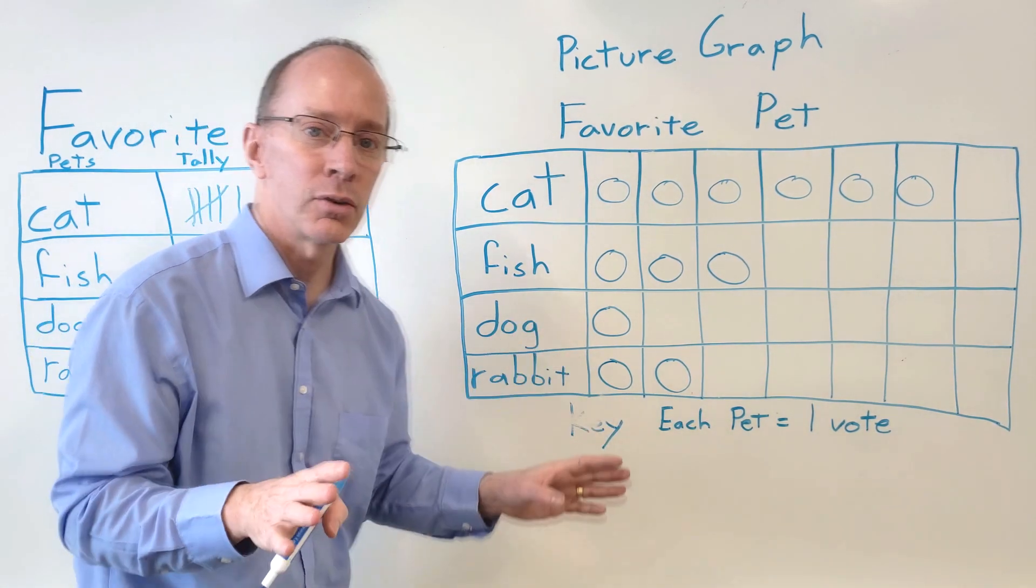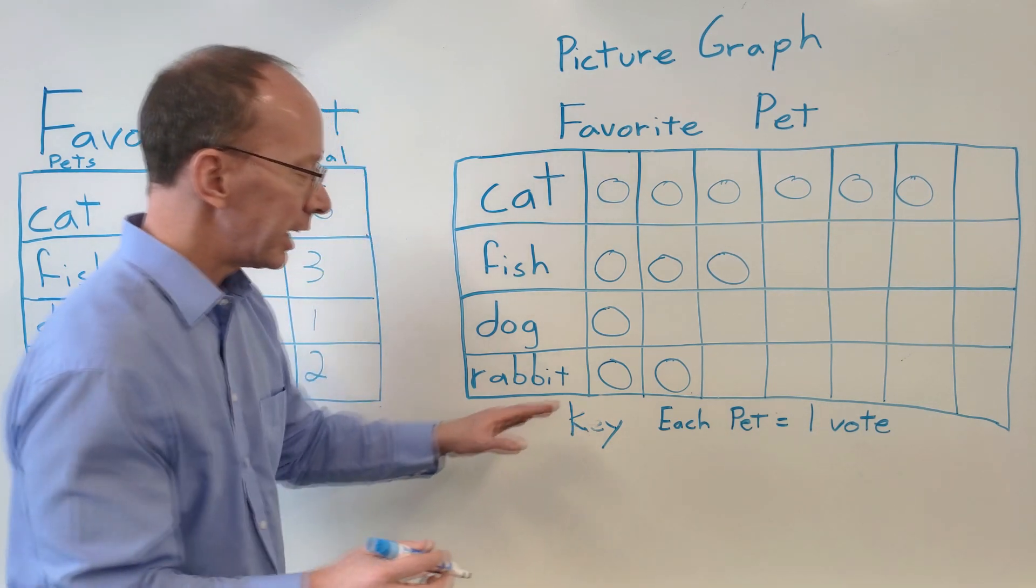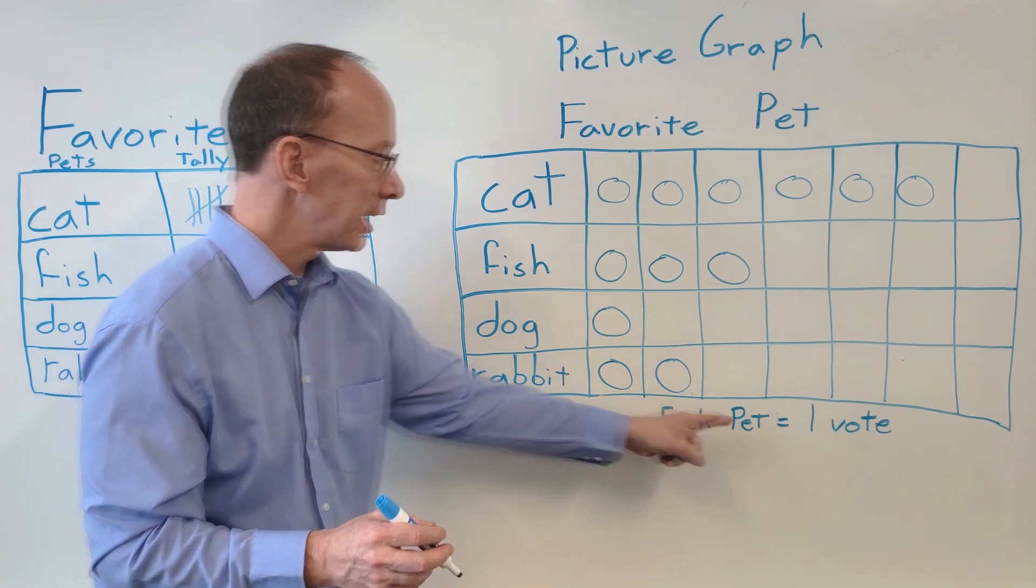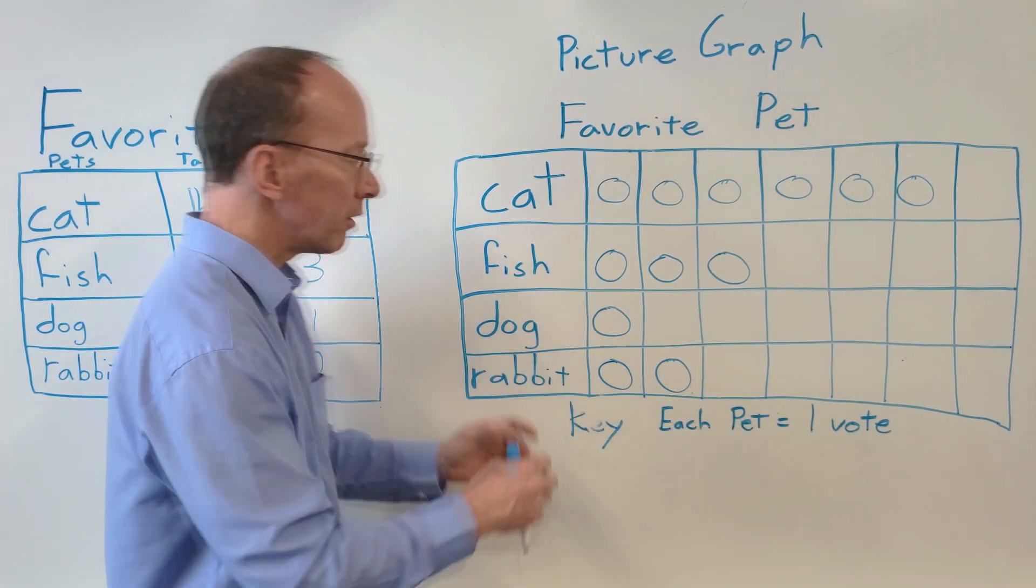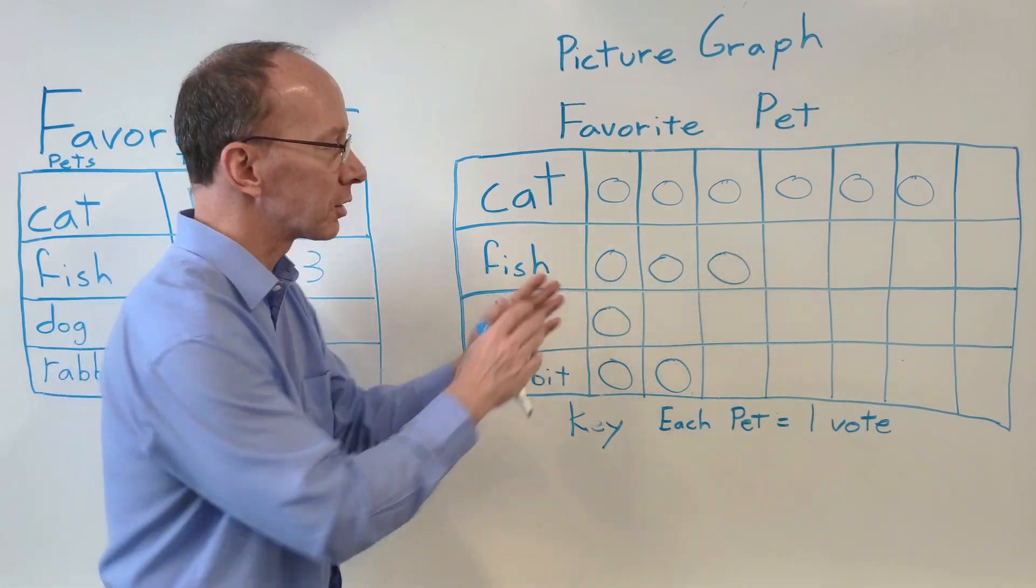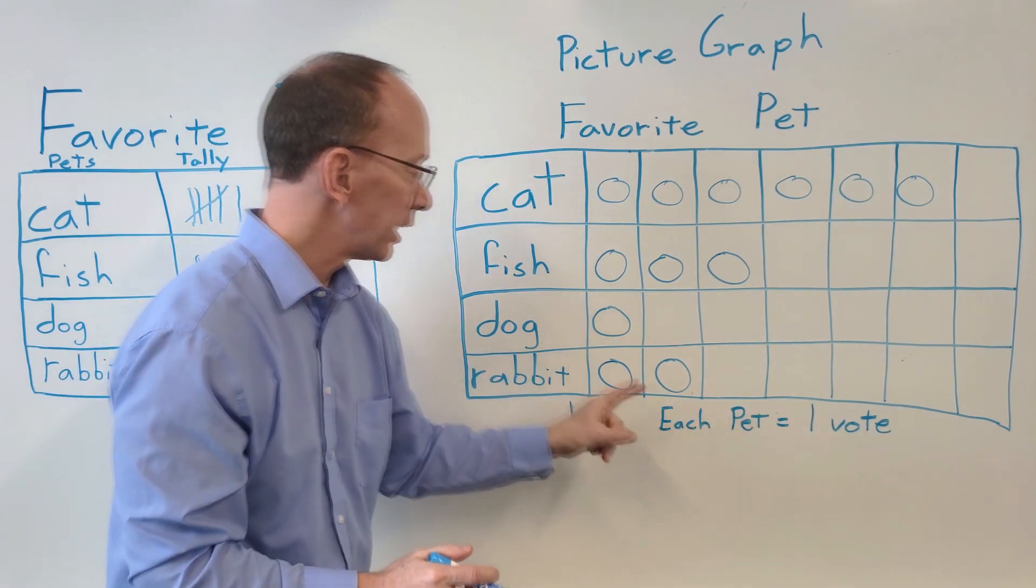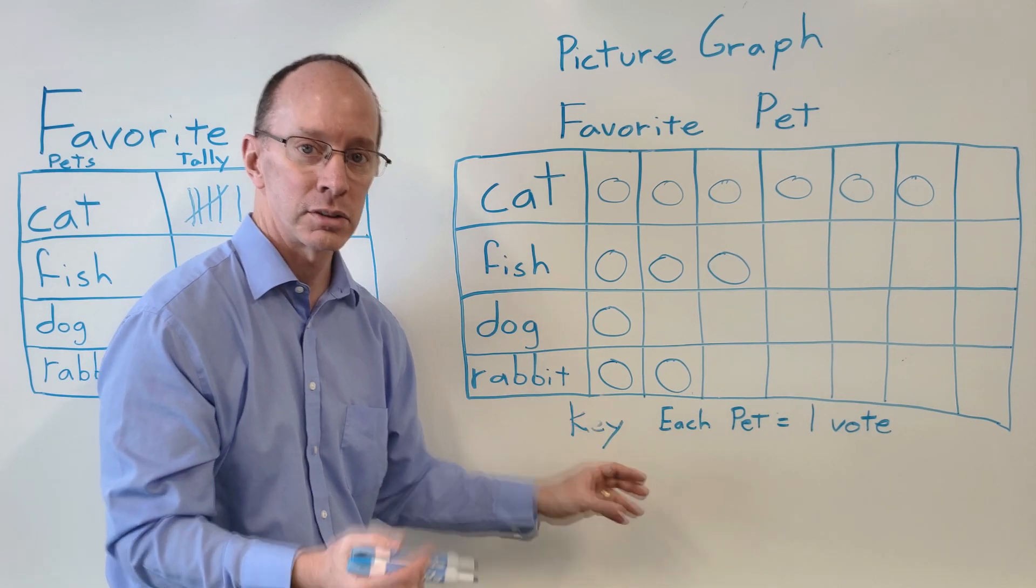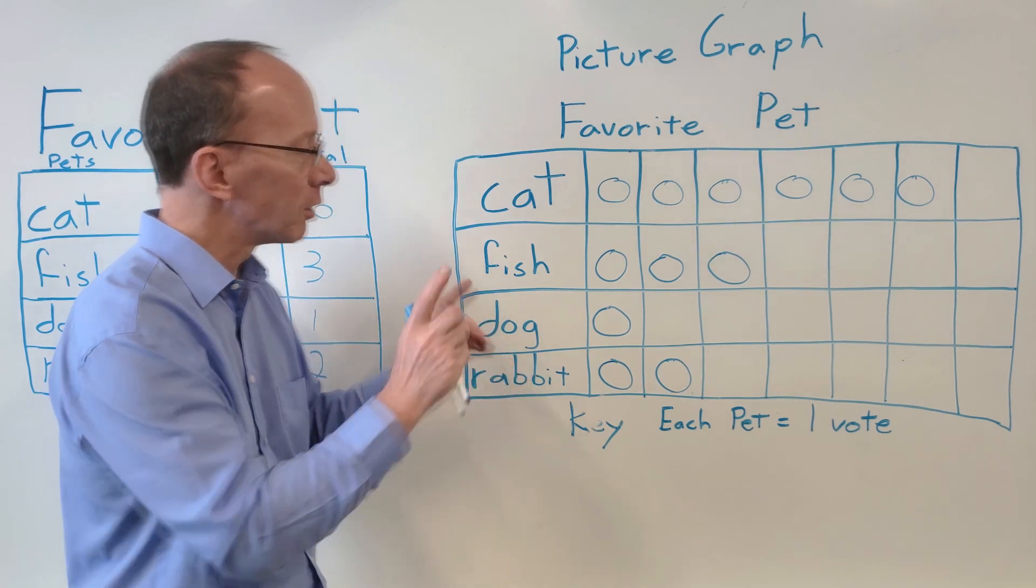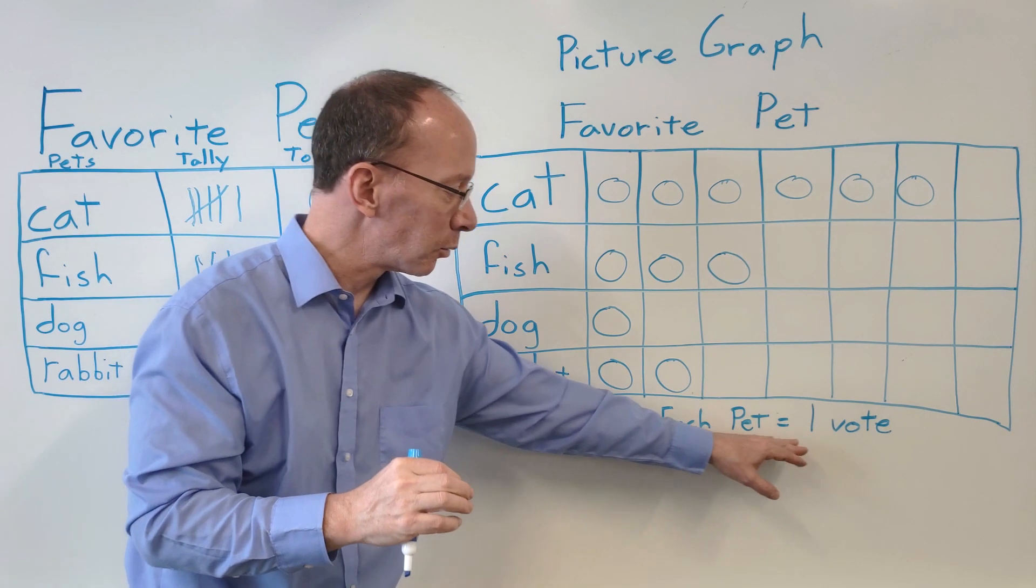Now on graphs, you're going to see a key. And a key represents, it'll tell you like for these circles, it'll tell you for this key, it says each pet equals one vote. Now if I were to have like 20 or 30, I wouldn't have room to put 20 or 30 circles in my picture graph. And so I might have to change the key to mean that every circle would mean two votes or five votes or something like that. And we'll have another video talking about that upcoming. But for right now, this is our picture graph and our key is one vote.